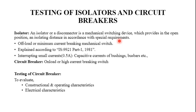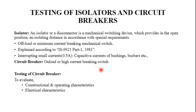The isolator is also capable of carrying current under normal circuit conditions and carrying a specified short-time current under abnormal conditions such as short circuits. This is further detailed by IS 9921 Part 1, 1981, and is subject to a small current limit of 0.5 A. The circuit breaker, by contrast, is an on-load or high-load current breaking switch.